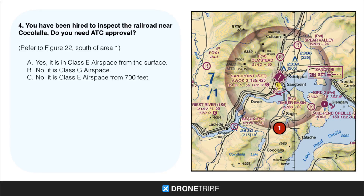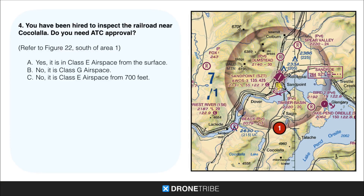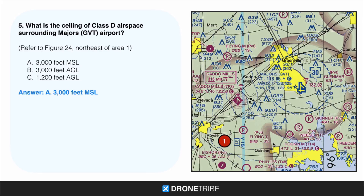Question 4: you've been hired to inspect the railroad near Cocolala. Do you need ATC approval? We're back at the Sandpoint Airport. Looking around, we can see that Cocolala is a little bit south and it's outside of the magenta vignette. So in this case, it's going to be Class Golf airspace, which is uncontrolled airspace. We're not going to need any sort of ATC authorization or approval.